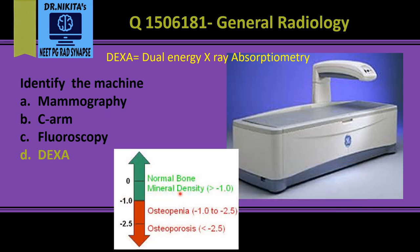Based on T-score values: a T-score greater than minus 1 is normal; a T-score between minus 1 to minus 2.5 standard deviations is osteopenia; and if the T-score is less than minus 2.5, it is osteoporosis. So basically, DEXA is used for osteoporosis.